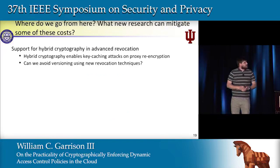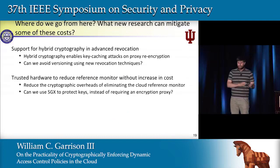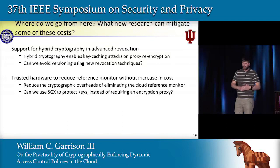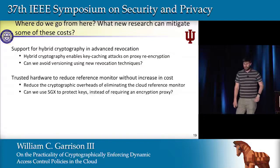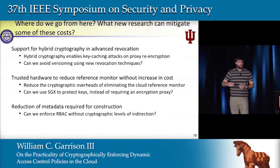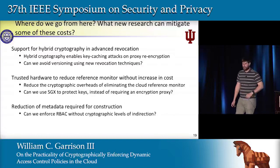By studying these issues, we've identified important areas of future research. We're working on advanced revocation techniques that operate on both parts of the hybrid crypto, enabling use of proxy re-encryption without concern that users have cached file keys. We're also looking to reduce the reference monitor using trusted hardware such as SGX, and exploring ways to eliminate the cryptographic levels of indirection that mirror the RBAC levels of indirection.